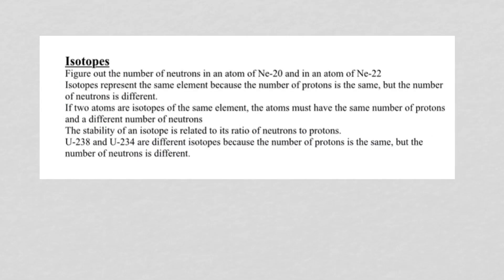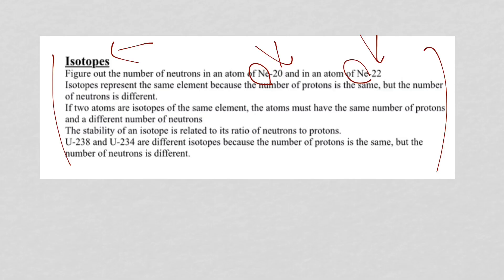Number five: isotopes. There is a lot of information about isotopes, meaning it shows up on pretty much every Chemistry Regents exam. An isotope means you have the same number of protons — so the same element — but a different number of neutrons, which means the mass numbers are different. Mass number equals protons plus neutrons, but the identity of an element comes from the number of protons. When you see the element symbol followed by a dash and a number, you're looking at a specific isotope.